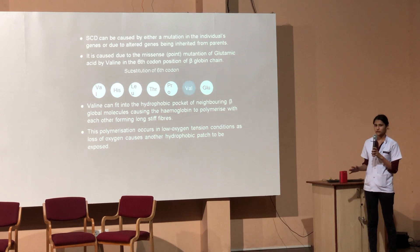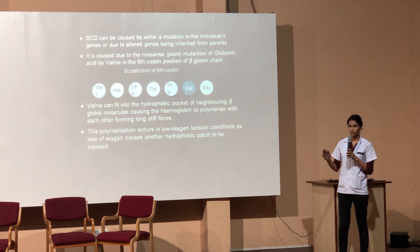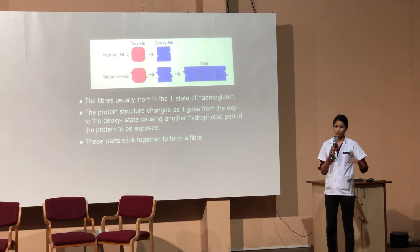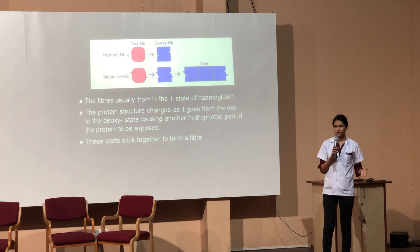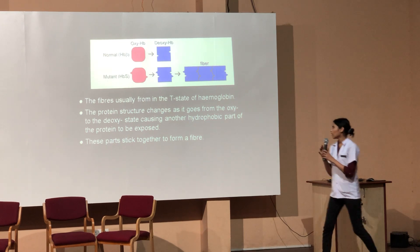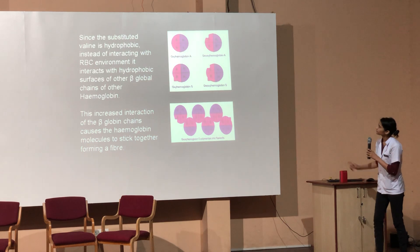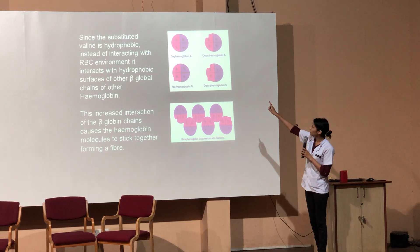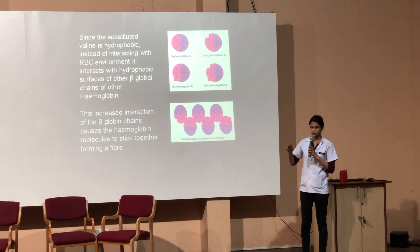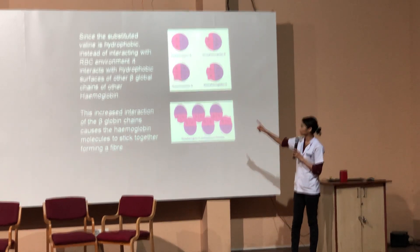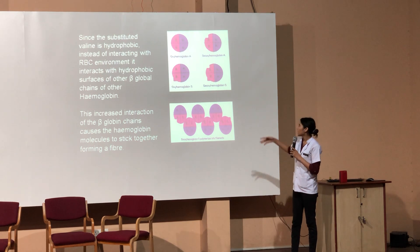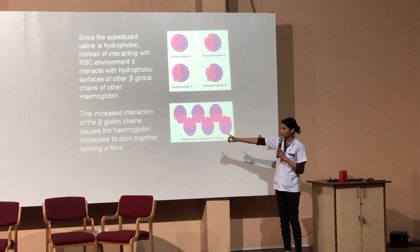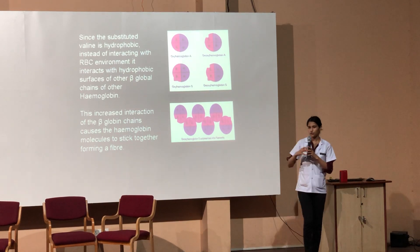Sickle cell RBC production usually happens in low oxygen environments. When oxygen is removed from the hemoglobin, the hemoglobin goes from a relaxed state to a blocked state. During this structural change, another hydrophobic site is exposed. Oxyhemoglobin A, which is normal hemoglobin, does not have any hydrophobic protrusions or dents. In deoxyhemoglobin, there is formation of a dent due to the change in structure. Oxyhemoglobin S, the abnormal hemoglobin, contains a protrusion due to the hydrophobic valine. Deoxyhemoglobin S contains a dent due to the absence of oxygen as well as a protrusion due to valine, resulting in the formation of long fibers of hemoglobin which change the shape of the RBC.